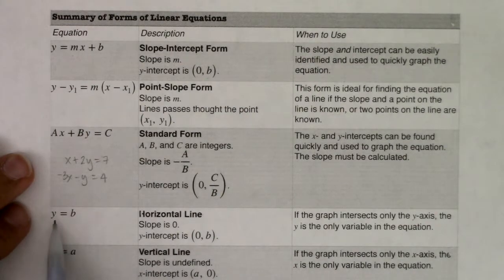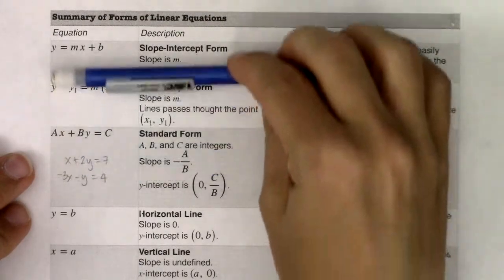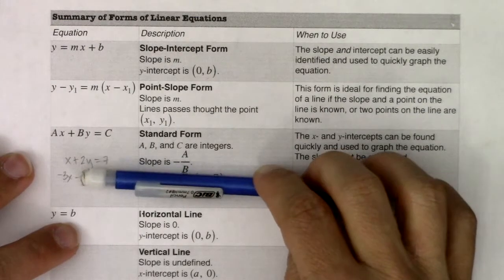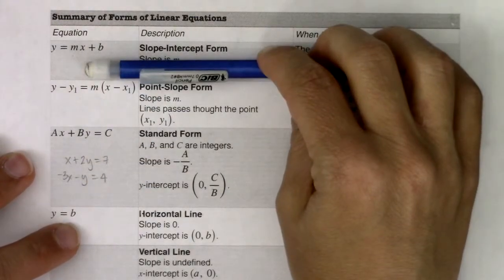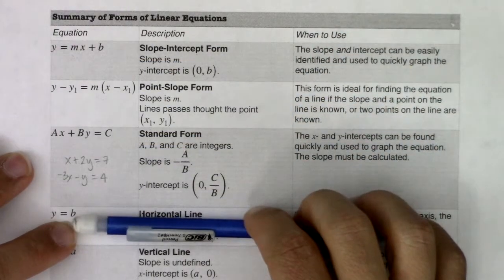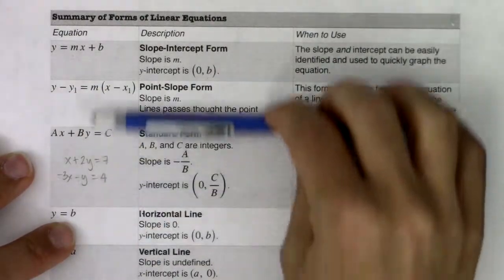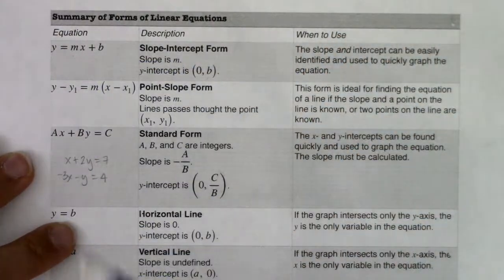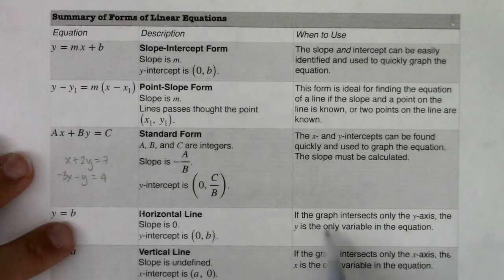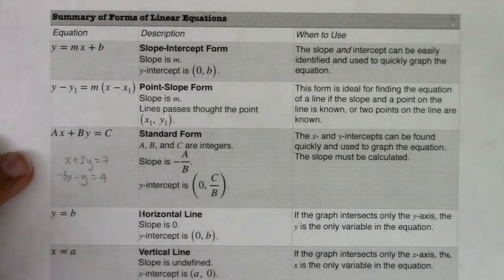For horizontal lines, they always come of the form y equals a number. When you're talking about a horizontal line, keep in mind y's move you up and down. So if you have y equaling 7, that would move you 7 units above the origin. If you had y was equal to -2, that would move you 2 units below the origin. So these y equals, they're horizontal lines, and they move up and down away from the origin. The slope on those is zero. The y-intercept is 0, b. And if the graph intersects only the y-axis, the y is the only variable in the equation. So there is no x in this equation.